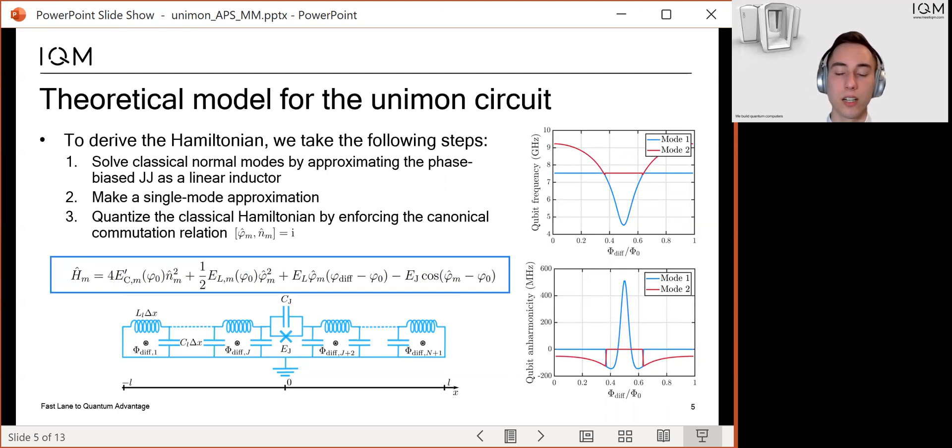First, we solve the classical normal mode frequencies and voltage envelope functions by approximating the Josephson junction as a linear inductor. Then we make a single mode approximation and neglect all other modes apart from the mode that we use as a qubit.